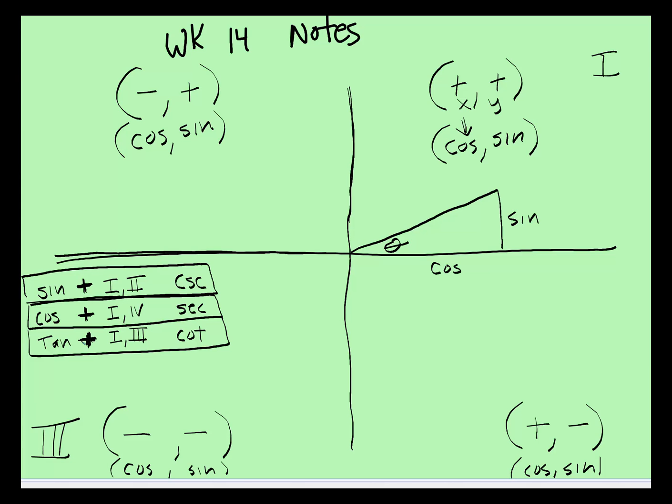Because remember, to have a positive number, if you're dividing or multiplying, both the signs need to be the same. And then in the fourth quadrant, the cosine is positive, but we go down, so the sine is negative.